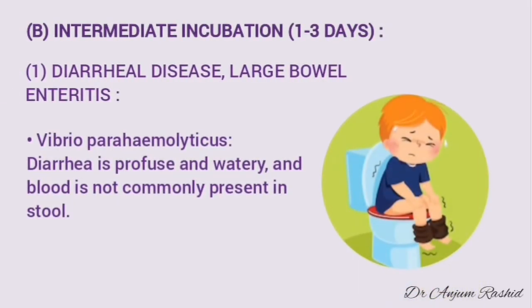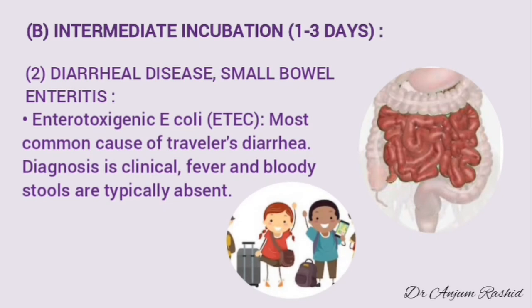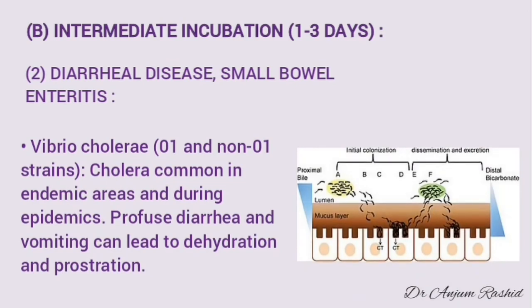Another organism producing diarrheal disease due to large bowel enteritis in the intermediate incubation period group is Vibrio parahaemolyticus. Diarrhea is profuse and watery, and blood is not commonly present in the stools. The diarrheal disease due to small bowel enteritis with intermediate incubation period of 1 to 3 days includes enterotoxigenic E. coli (ETEC), the most common cause of traveler's diarrhea. Diagnosis is usually clinical; fever and bloody stools are typically absent. The second important organism is Vibrio cholerae — cholera is common in endemic areas and during epidemics and produces profuse watery diarrhea and vomiting, leading to dehydration and prostration.